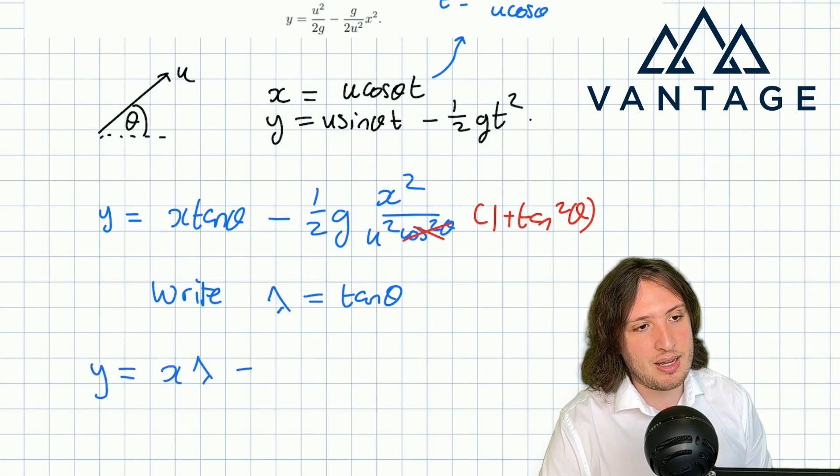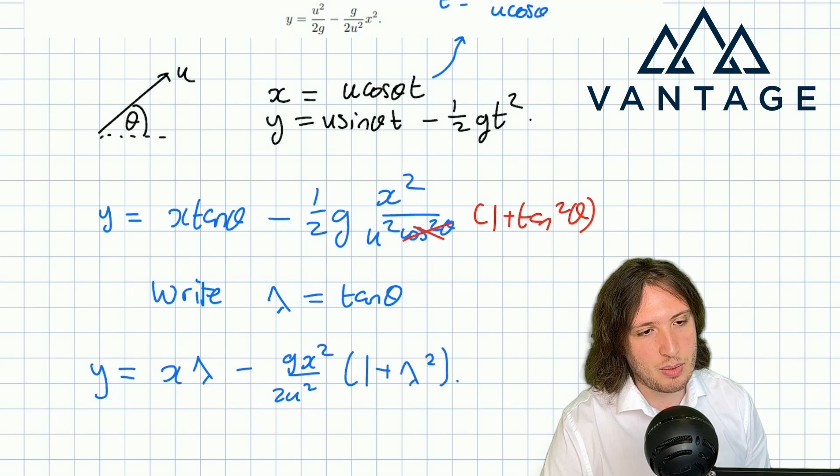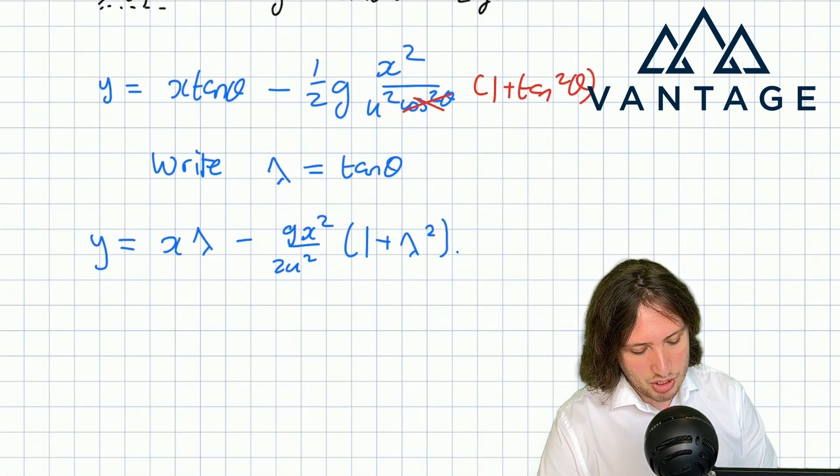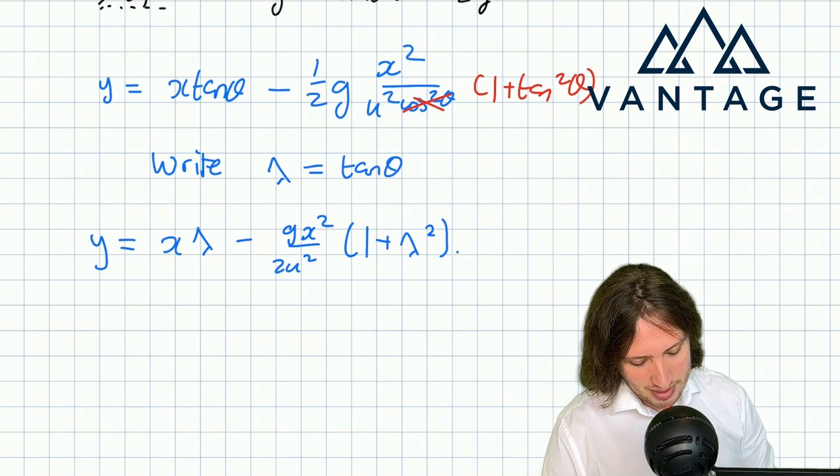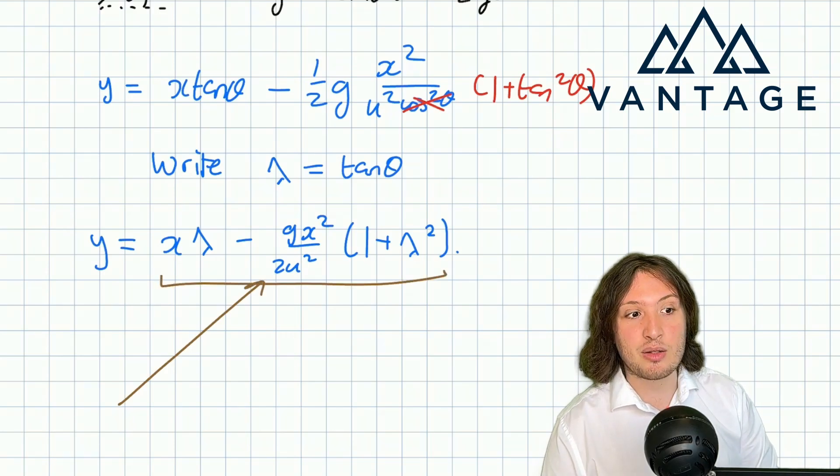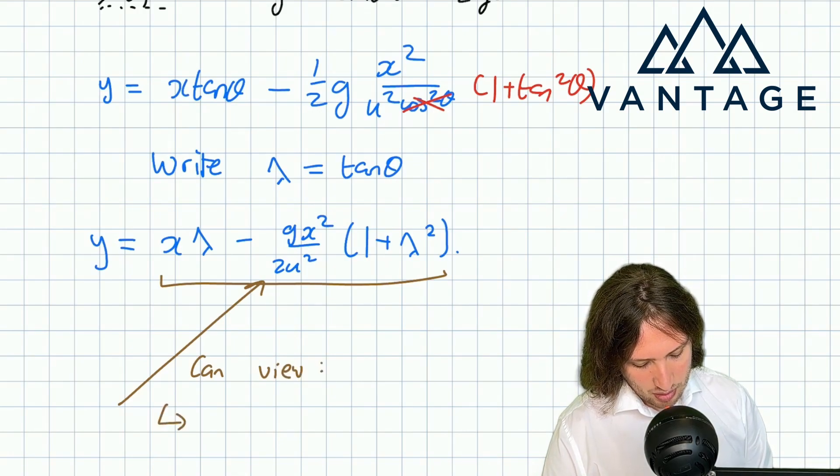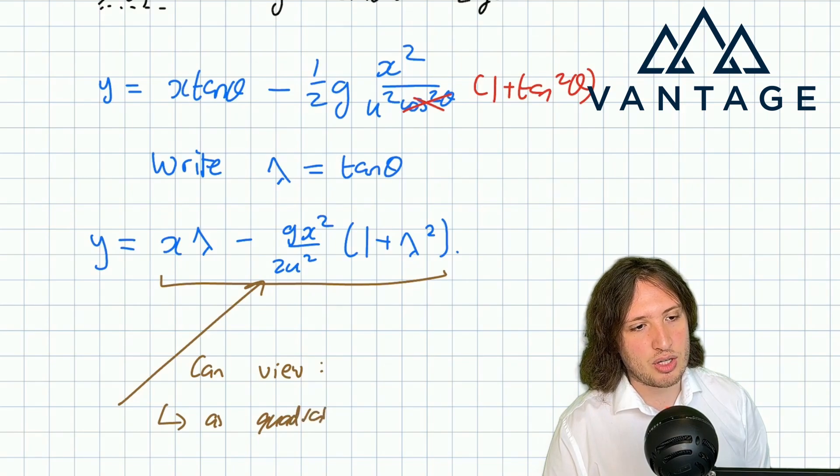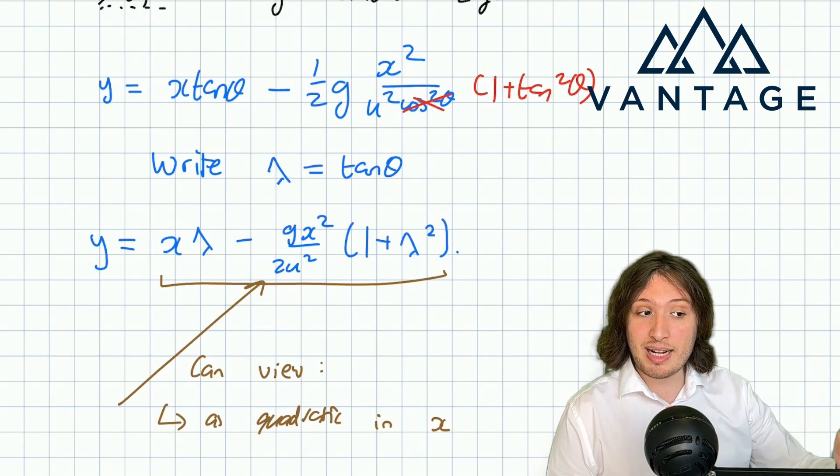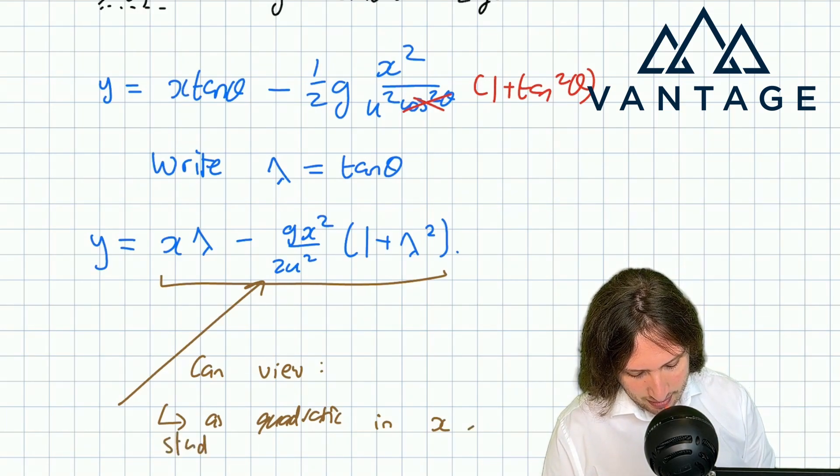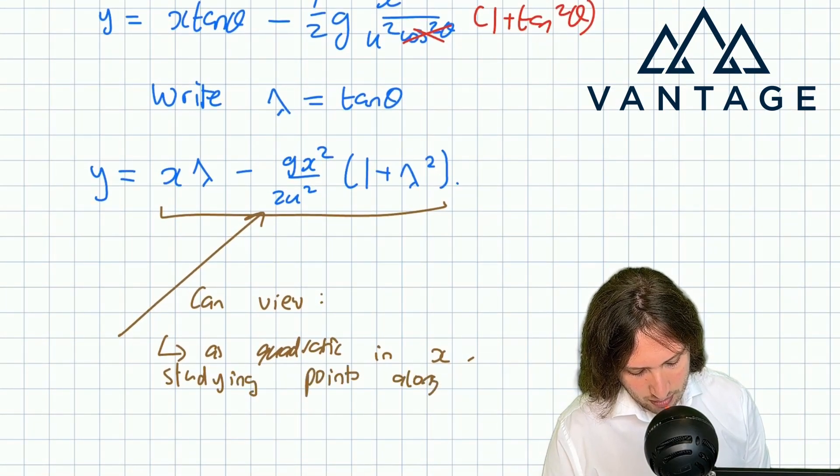So I've got y equals x λ minus gx² by 2u² times (1 plus λ²). This equation is quite remarkable because it has a dual perspective. We can view it firstly as a quadratic in x—you can imagine fixing λ, fixing your angle of projection—you've got a quadratic in x which means you're studying the points along one trajectory.